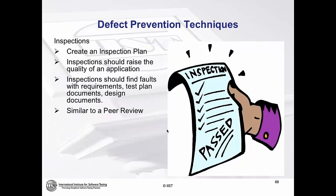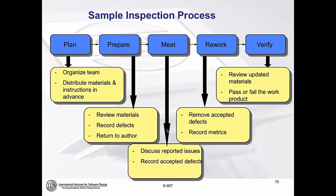Inspections. Inspections is your most formal type of review process. Companies can get training on how to conduct inspections. You would have a trained moderator who can walk you through how an inspection is supposed to go. It looks similar to a regular review, but there are templates that you use, you track everything, you absolutely capture metrics, and you identify the cost of those metrics found versus found in later phases.